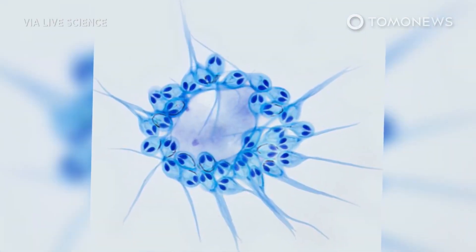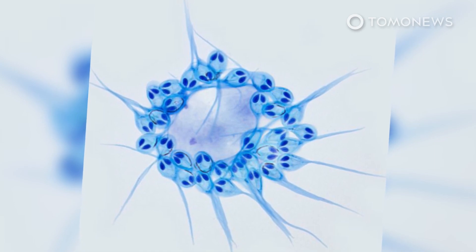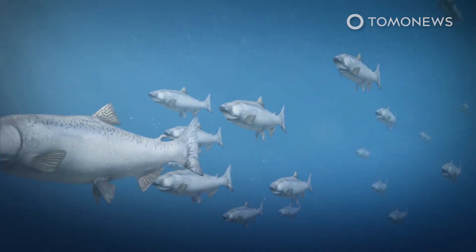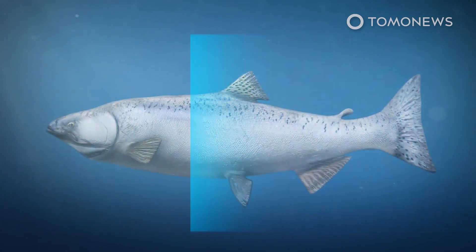This bizarre creature is the only multi-cell animal species scientists know of that does not breathe. The Heneguya salminicola is a species of parasitic blob that lives inside and feeds on the flesh of fish.